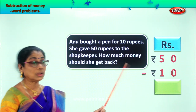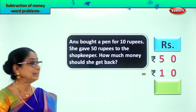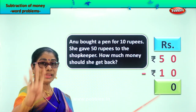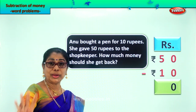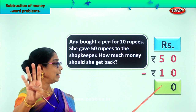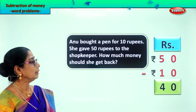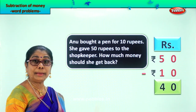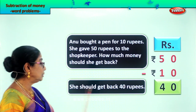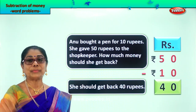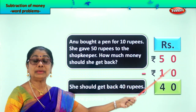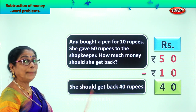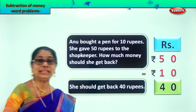Let's work out the sum to answer the question. 0 minus 0 is 0 itself. Then 5 minus 1 — 5 take away 1 gives you 4. So we write 4, giving us 40 rupees. How much money should she get back? She should get back 40 rupees from the shopkeeper.